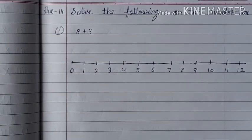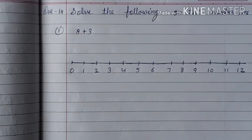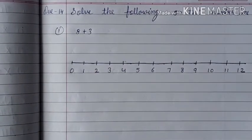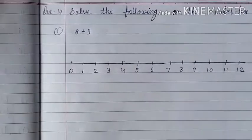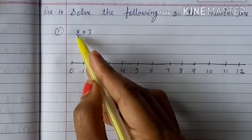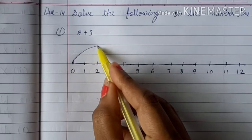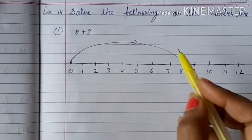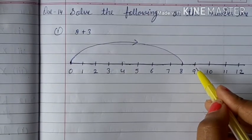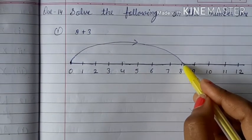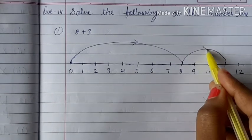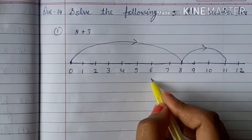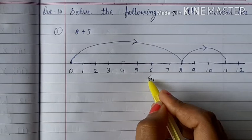Question 14 is solve the following on the number line. First is 8 plus 3. So first we draw the number line. And now we add. First number is 8, so we go from 0 to 8. Then add 3, so we count 1, 2, 3. So we go to 11. So the answer is 11.